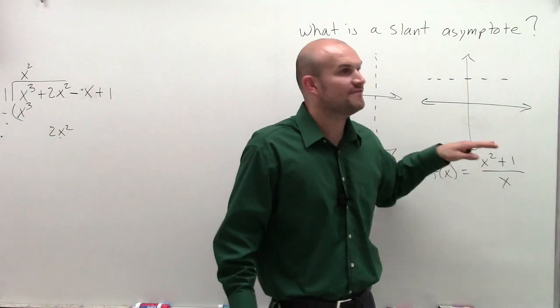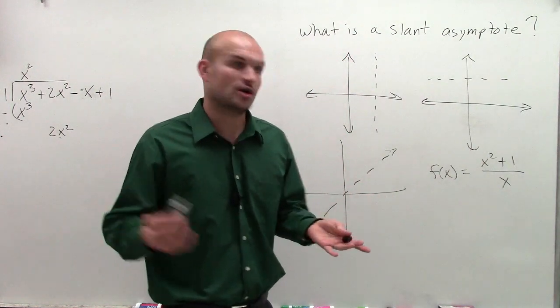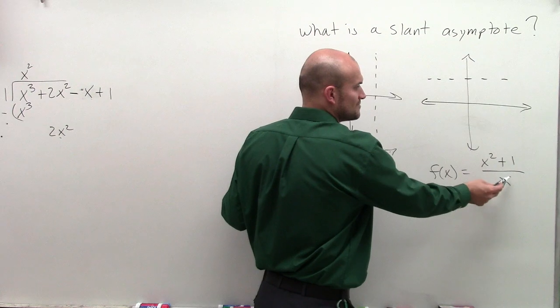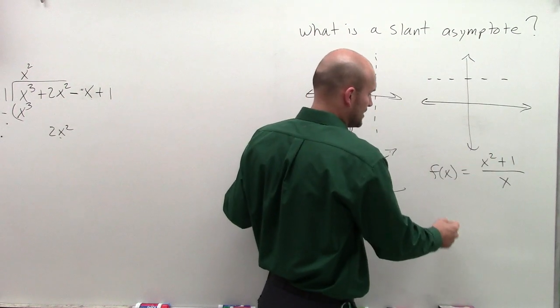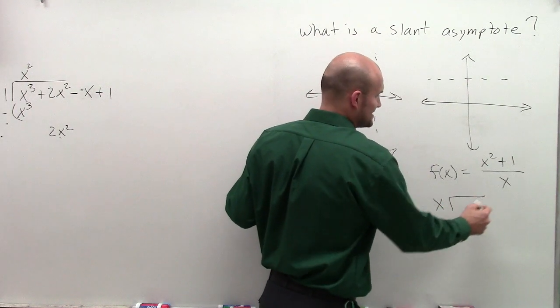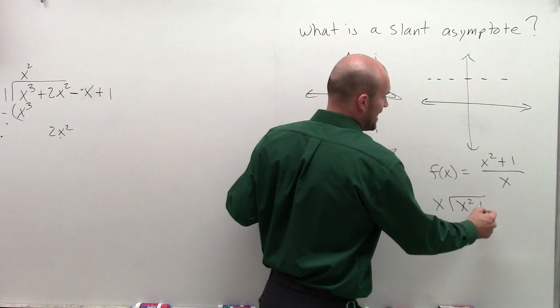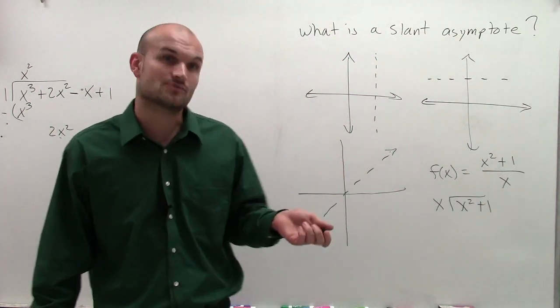So to find the value of your slant asymptote, we use long division. I take my denominator - since it has a smaller degree, I know I can divide my denominator into my numerator. So to find the value of my slant asymptote, I'm simply going to divide x into x squared plus 1.